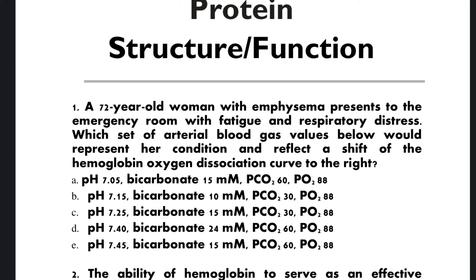Option A: pH 7.05, bicarbonate 50 mM, PCO2 60, PO2 88. Option B: pH 7.15, bicarbonate 10 mM, PCO2 30, PO2 88. Option C: pH 7.25, bicarbonate 50 mM, PCO2 30, PO2 88. Option D: pH 7.40, bicarbonate 24 mM, PCO2 60, PO2 88. Option E: pH 7.45, bicarbonate 50 mM, PCO2 60, PO2 88.